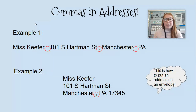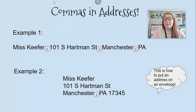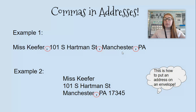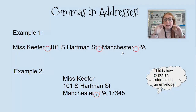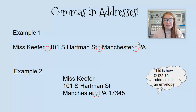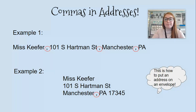But Manchester and PA are on the same line, so they still need that comma separating them. So again — example one, if it's all in one long line, you use a comma to separate each part. Example two, if it's separated by line, you only need a comma in between the city and the state. You will see an example like that again in the future.